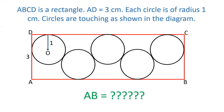There is a point of contact of circle with the rectangle. These are the points of contact of circles, and these two points are points of contact of circle with the rectangle. We have to find the length of this rectangle — that is, what will be the length of the rectangle so that it can hold 5 circles.